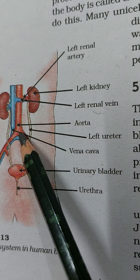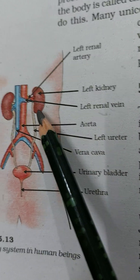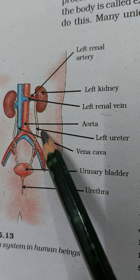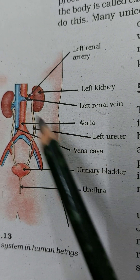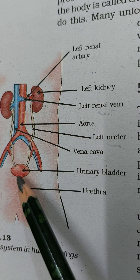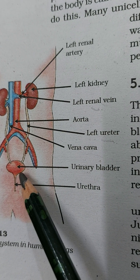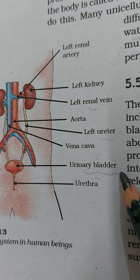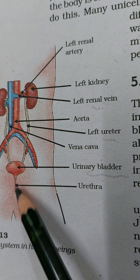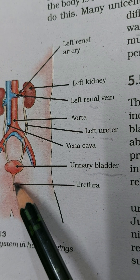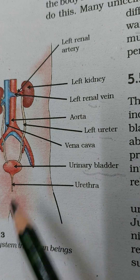The renal artery carries oxygenated blood into the kidneys. From each kidney, there are two long tube-like structures called the ureter. These two ureters connect to a stretchy, muscular, bag-like structure called the urinary bladder. From the urinary bladder, there is a tube-like structure called the urethra through which urine is released.